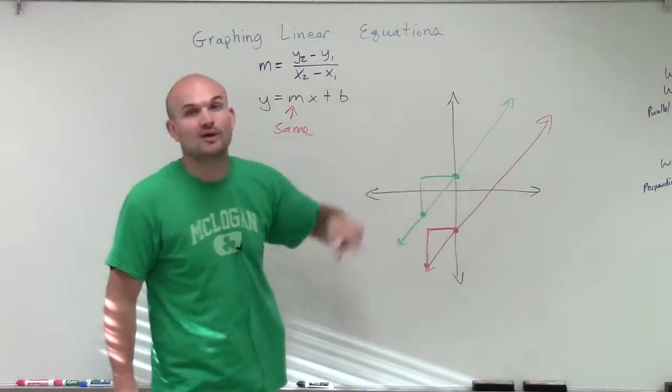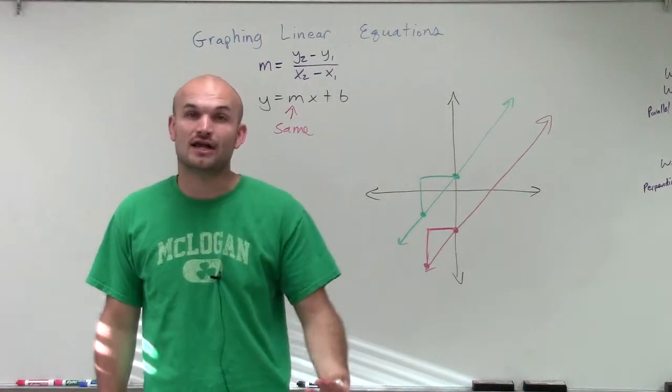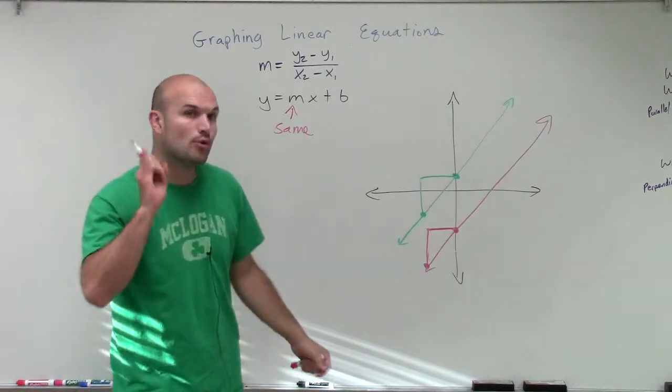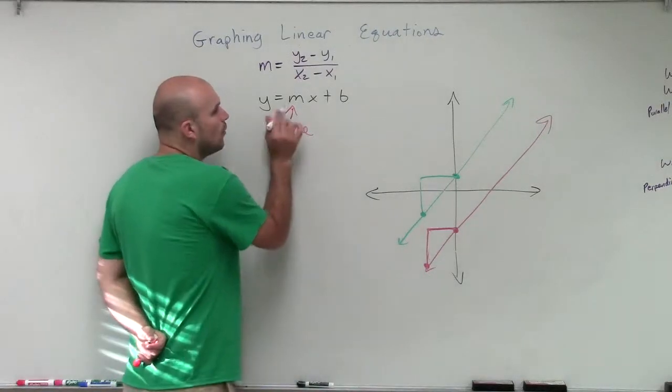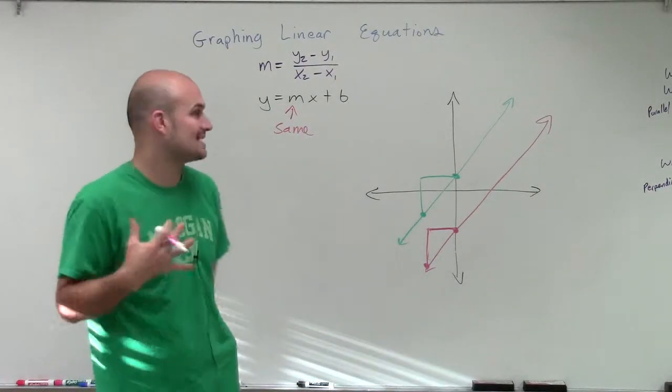Because when we're going to be finding, if I'm going to be given a line, and I'm going to want to find a line that's parallel to that line, the one important thing that I need to understand is that the slopes have to be the exact same.